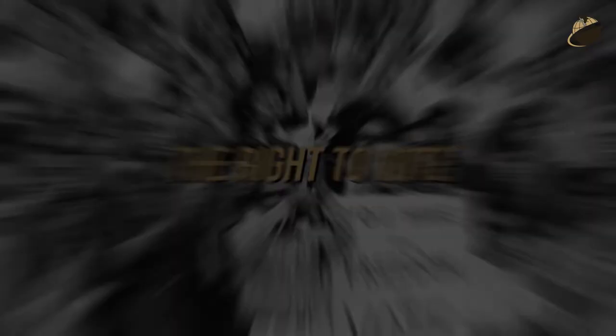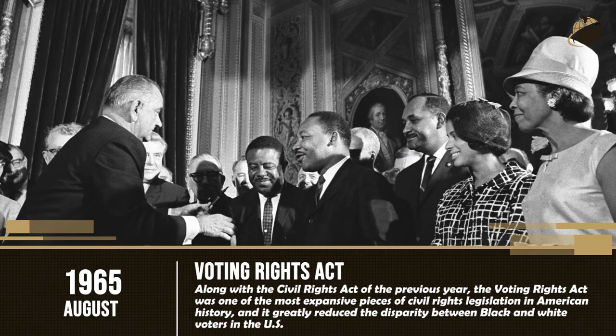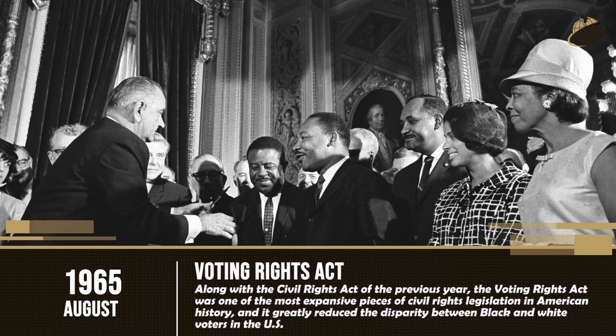1965 — Voting Rights Act, August. Along with the Civil Rights Act of the previous year, the Voting Rights Act was one of the most expansive pieces of civil rights legislation in American history, and it greatly reduced the disparity between black and white voters in the U.S.